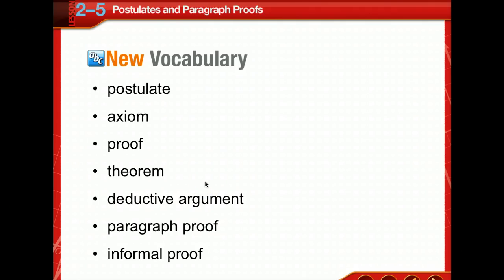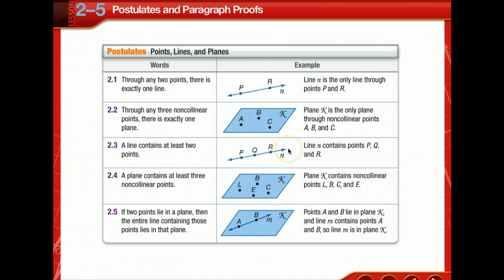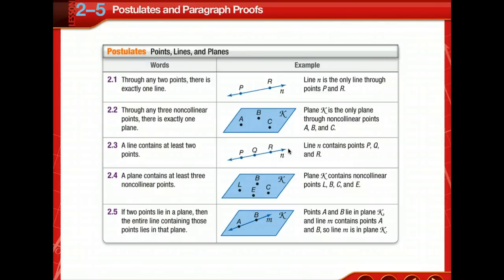An informal proof doesn't mean it's any less important than formal proofs — it's just a different type. In a separate place in your notes, you're going to need to list all the postulates we come across. You'll also need a place for definitions — point, line, plane, perpendicular line, that kind of thing — as well as a place for properties and a place for theorems. So you're going to need sections for postulates, properties, theorems, and definitions.